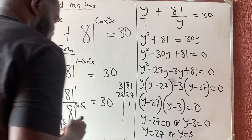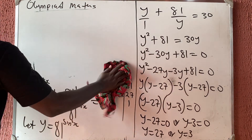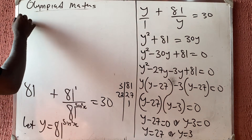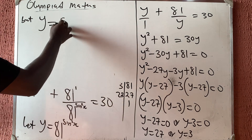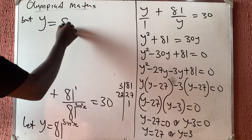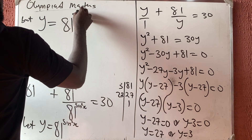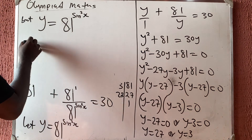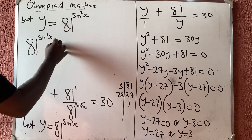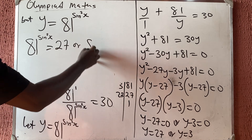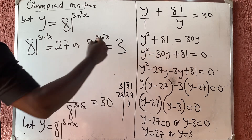So y equals 27 or y equals 3. But we are not looking for y — we are looking for x. Recalling that y equals 81 raised to the power sine squared x, we substitute back: 81 raised to power sine squared x equals 27, or 81 raised to power sine squared x equals 3.